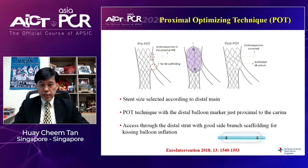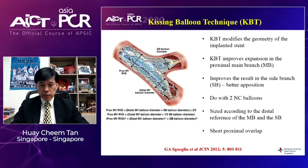One important accompaniment to provisional stenting is the proximal optimization technique. First, choose the stent size according to the distal diameter, then use a POT technique with the distal balloon marker placed just proximal to the carina — this allows easy side branch access afterward. Ensure that the balloon has a marker right at the shoulder of the balloon to avoid excessive damage to the distal vessel. The kissing balloon technique is also used by some to modify stent geometry, improve expansion in the proximal main branch, and improve access to the side branch, using two non-compliant balloons.